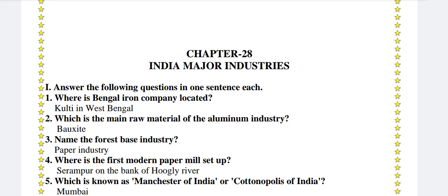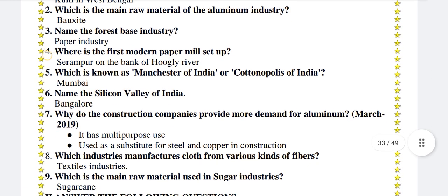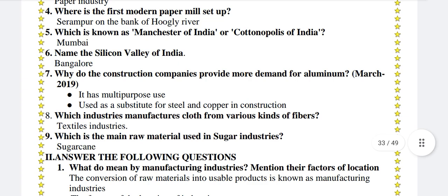Name the forest-based industry. Paper industry. Where is the first modern paper mill set up? Sirampur on the bank of Hooghly River. Which is known as the Manchester of India or Cotton Polis of India? Mumbai. Name the Silicon Valley of India. Bangalore.